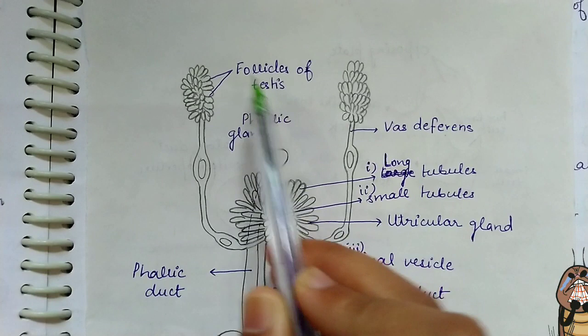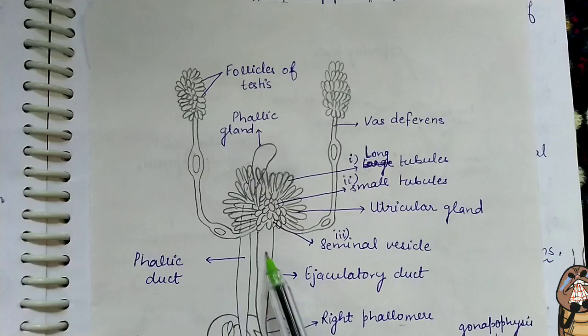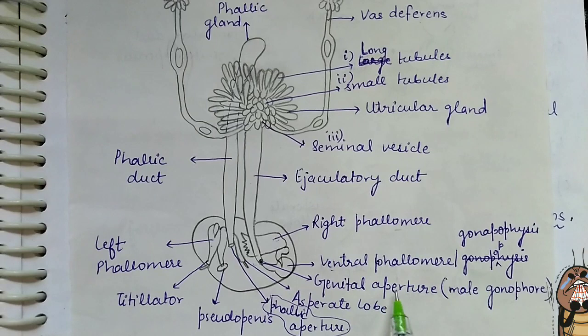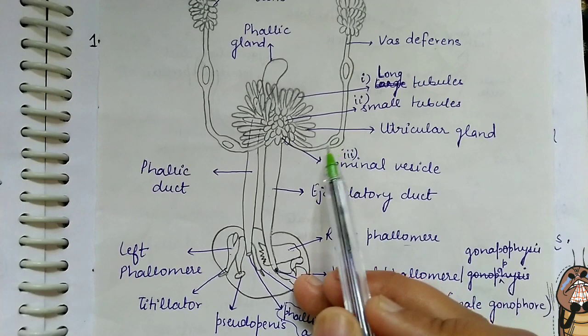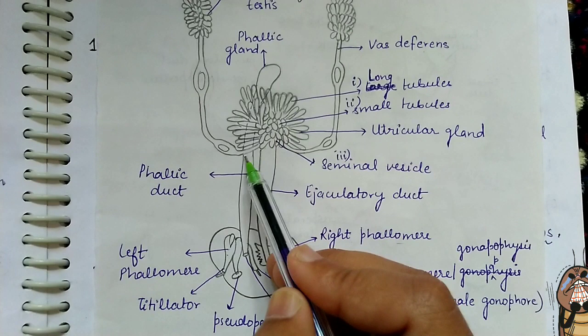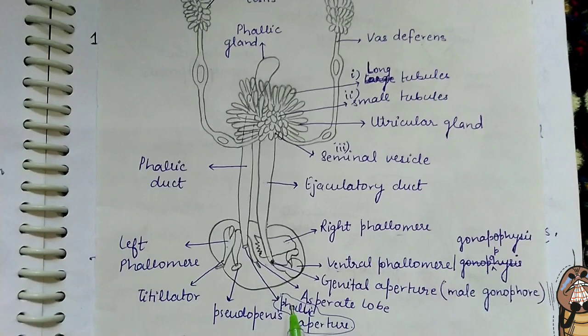The testes lead further into the vas deferens. The vas deferens get connected to the ejaculatory duct. The ejaculatory duct ends in a structure known as the genital aperture or male gonophore. Along the path from the vas deferens into the ejaculatory duct, there is a structure known as the utricular gland.